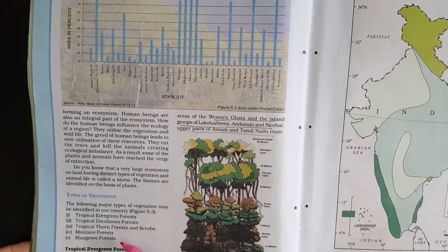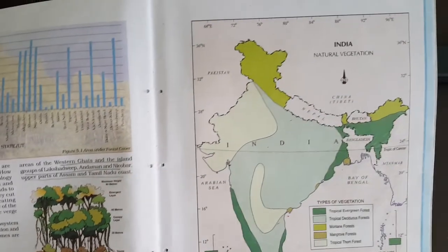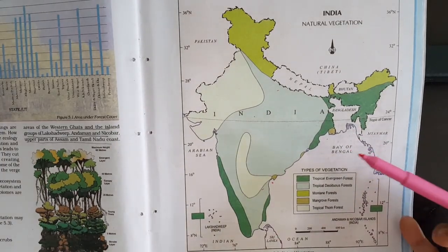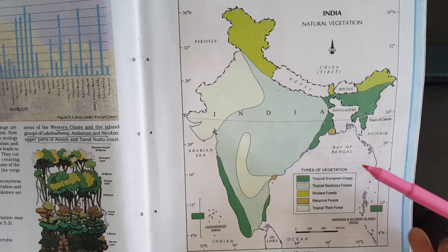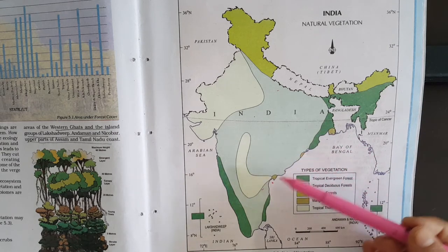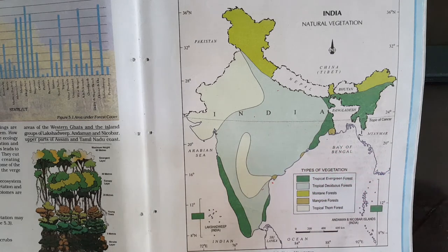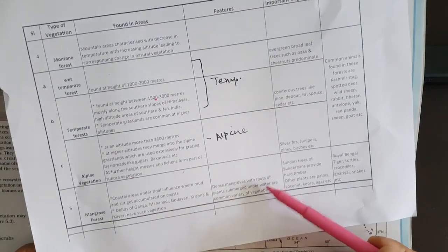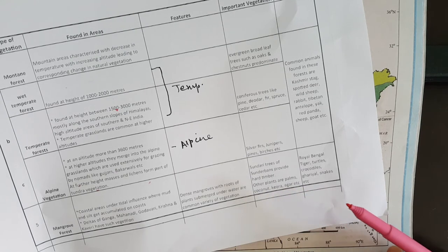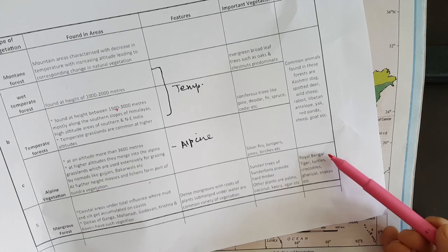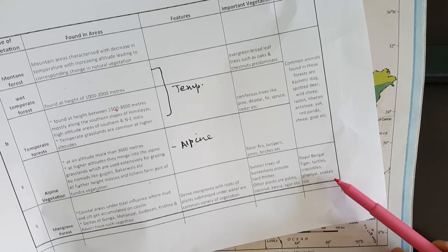The last vegetation type is mangrove forest, found in coastal and deltaic areas where tidal influence is present and the area is submerged under water. Such forests are found in the deltas of Ganga, Mahanadi, Godavari, Krishna, etc. The roots of the plants are submerged under water. Some important trees are Sundari trees of Sundarbans, coconut, kevda, agar and palm. The animals found in these marshy delta areas are Royal Bengal tiger, turtles, crocodiles, ghariyals, and snakes.